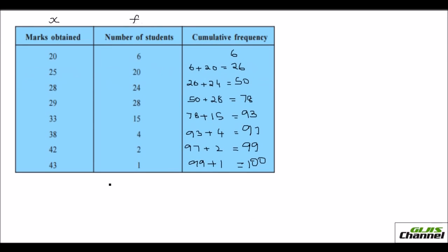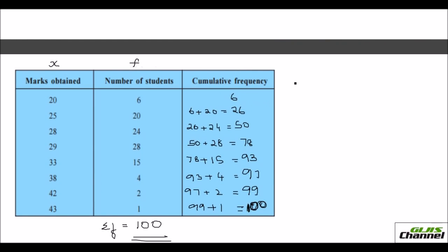Always see that this total of frequency will match with the last digit in the cumulative frequency. If you total this frequency, that will be equal to this last digit you get in the cumulative frequency. Now, your n, this time it is capital N, because it is the total. So your n is 100. So when n is 100, it means it is even. So when it is even, what do we do?